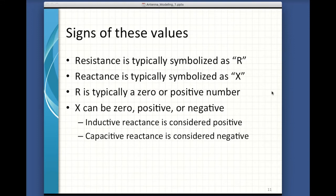Resistance is typically symbolized by R. Reactance is typically symbolized by X — you may see that on some of your antenna analyzers. R is typically zero or a positive number, and X can be zero, positive, or negative. Inductive reactance is considered positive, and capacitive reactance is considered negative. You can have both inductive and capacitive reactance in a circuit, and those things can cancel each other out, partially or totally. So when we talk about the reactance that we see, it's the net reactance between capacitive and inductive reactance in the circuit.